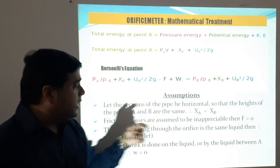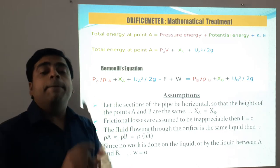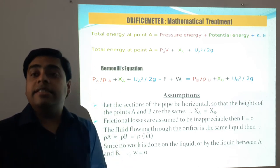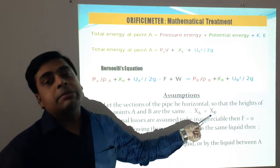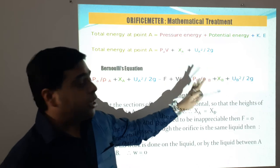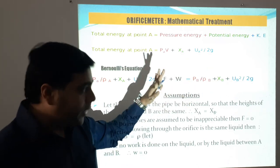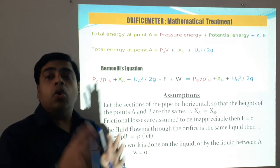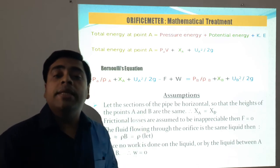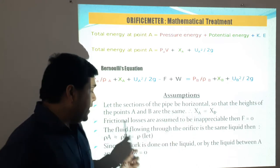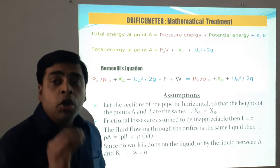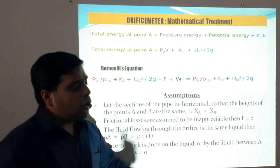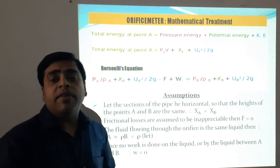The first assumption is that the sections of the pipe are horizontal, meaning the heights of points A and B are the same — so XA = XB. The second assumption is that frictional losses are inappreciable, meaning the value of F can be considered as zero, since friction losses are negligible and can be neglected.